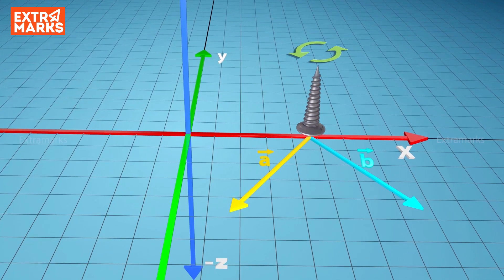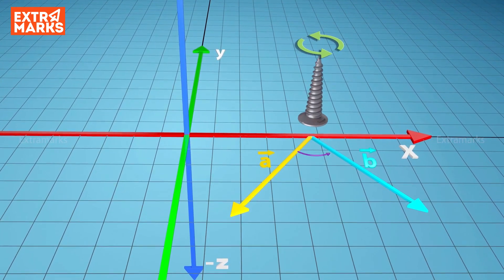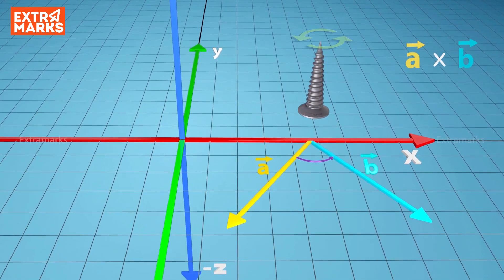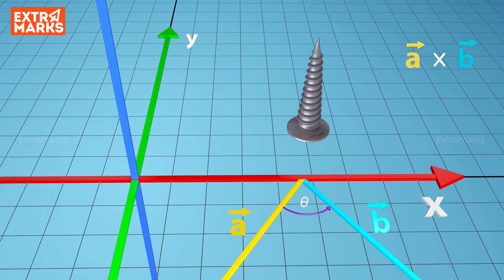Turn the head of the screw in the direction from A to B, i.e. A cross B through smaller angle theta.